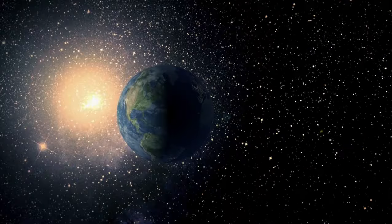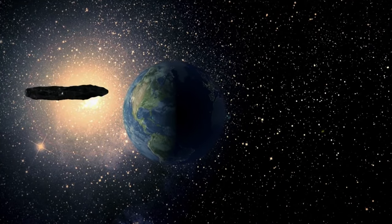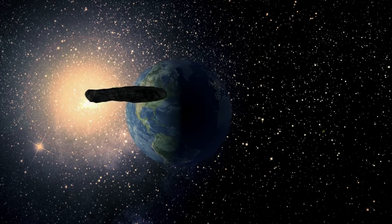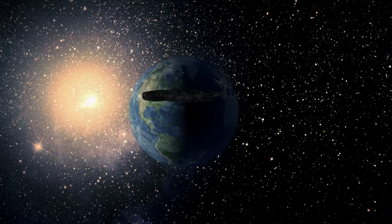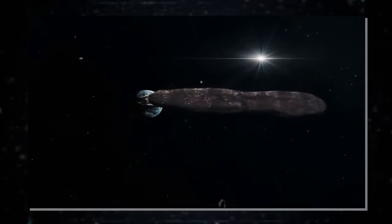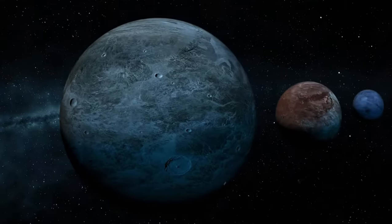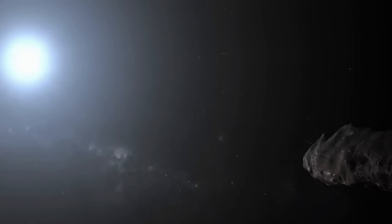Some researchers suggest that Oumuamua's elongated form, as inferred from its light curve, indicates that it could be a fragment of a larger body. If Oumuamua broke off from a larger object due to a collision or other violent events, it might have acquired substantial velocity during the separation process. This would imply that Oumuamua's speed is not intrinsic to its nature, but rather a result of past events.